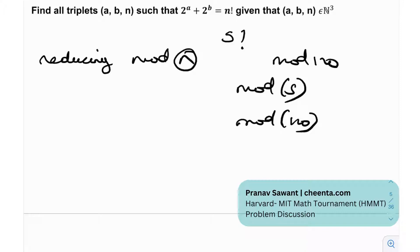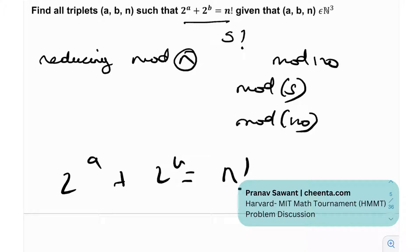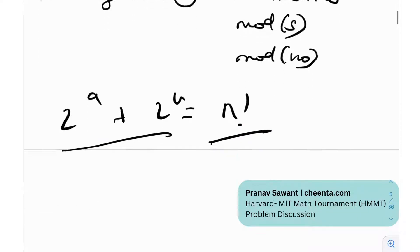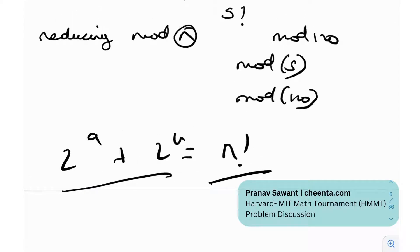Another thing to consider: problems like these in number theory either have a very small number of solutions — say two, three, or four — or an infinite family of solutions. Experience helps you estimate which case applies. Here, since we have an exponential term on one side and a factorial on the other, they don't really go well together, so it probably has only a small number of solutions.